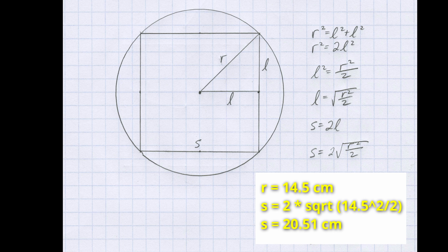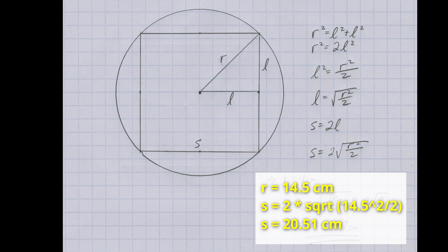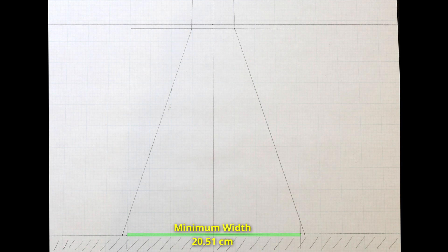Now we just need to repeat this process to get the exact base dimensions. We already know the top dimensions of the base, as they are identical to the bottom of the column. We can reuse the equation we derived earlier to figure out the minimum size of our base to fit the 29 centimeter circle. If we plug in a radius of 14.5 centimeters, we get a result of 20.51 centimeters. Here I have drawn the minimum dimension of 20.51 centimeters.